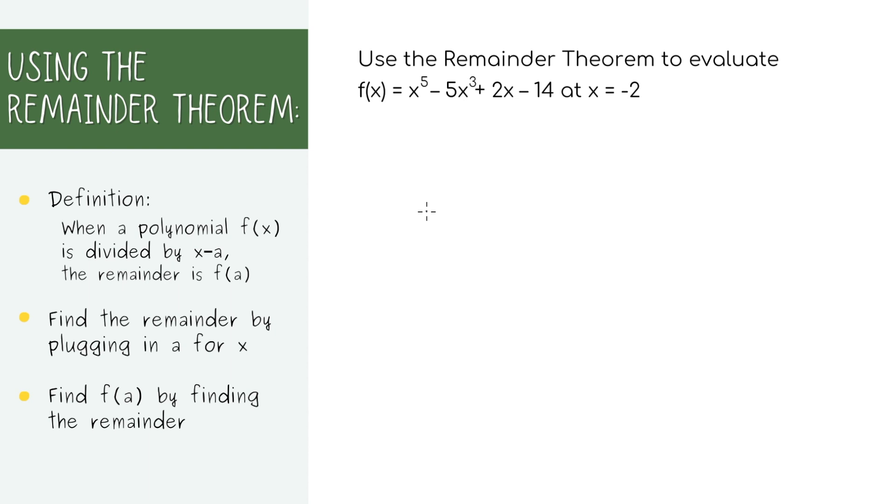The second type of problem you might run into is to evaluate a function at a certain value using the remainder theorem. So for this question, it's asking you to use the remainder theorem to evaluate this polynomial at x equals negative 2. One way of doing it, which we're used to, is to plug in negative 2 into the function, but specifically it asks you to use the remainder theorem.